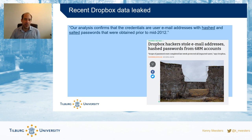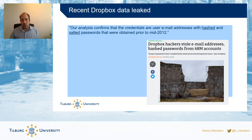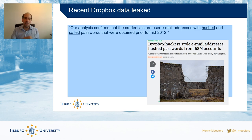Even despite the best intentions, systems can still have flaws — data gets leaked, containing passwords, email addresses, and so on. For example, a long time ago Dropbox had millions of accounts leaked from their database. The email addresses were leaked, but the passwords were hashed and salted — meaning the passwords themselves were not visible, but the encrypted version was. Salting means the encryption key had a random element not publicly known, so people couldn't easily discover what the password was even by attempting to encrypt and compare.